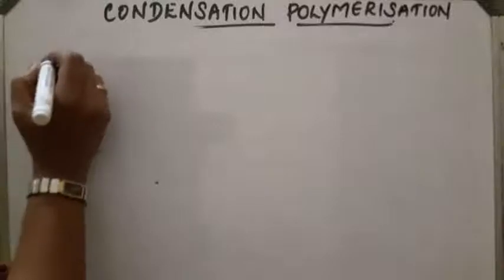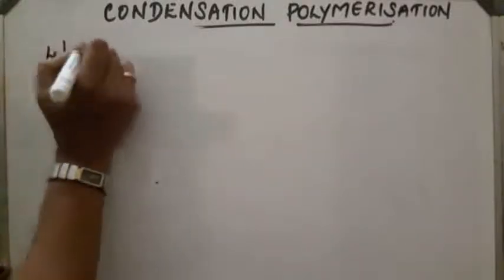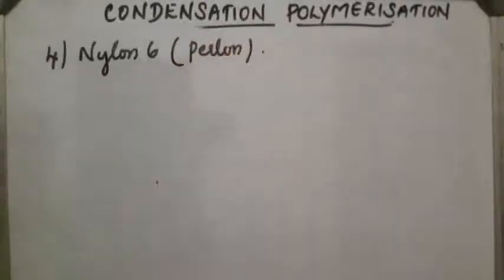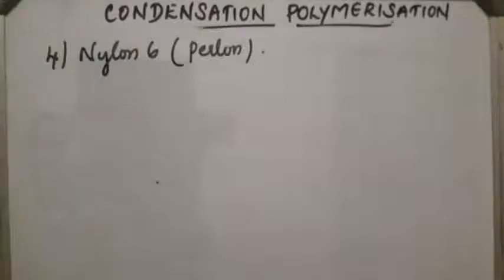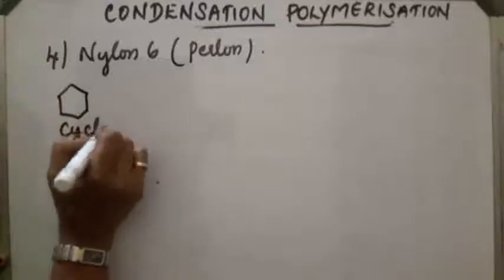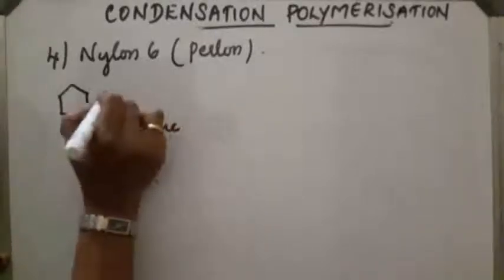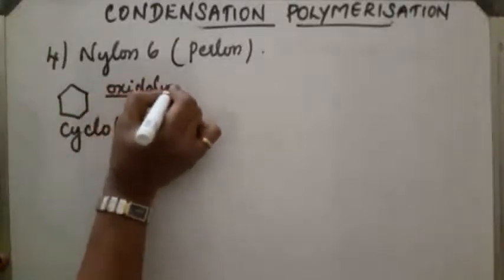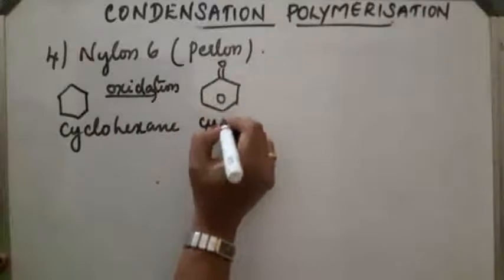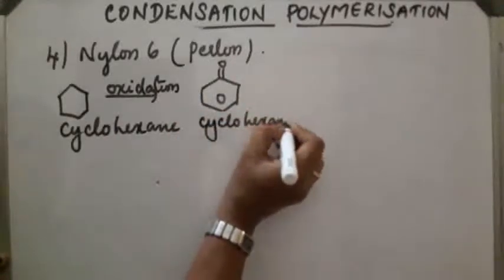The next polyamide example is nylon-6, also called perlone. This can be obtained from caprolactam. Caprolactam, when heated with traces of water, polymerizes and forms nylon-6. Caprolactam itself is prepared from cyclohexane, which on oxidation forms cyclohexanone.